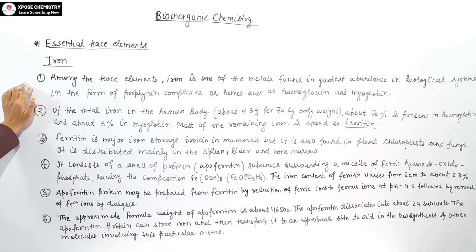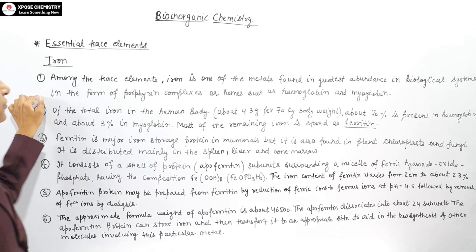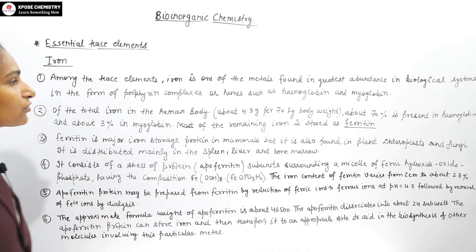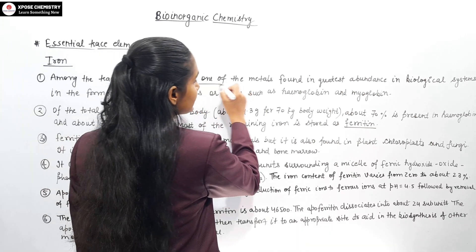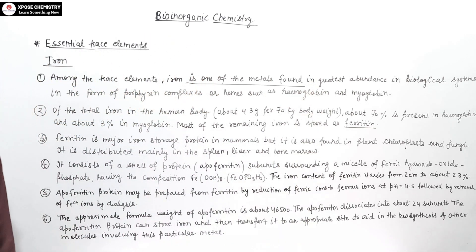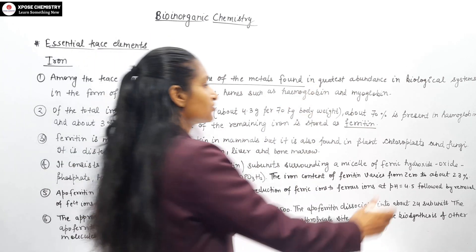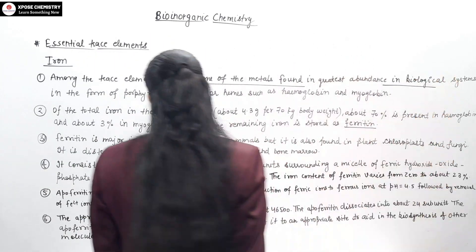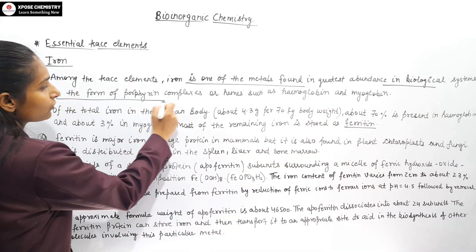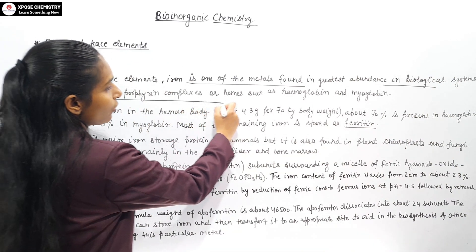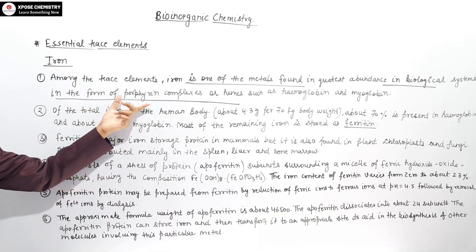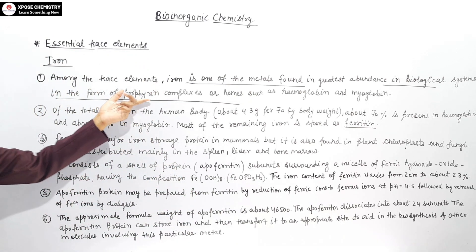First, we do iron. Iron is the most abundant trace element in biological systems. It is found in the form of porphyrin complexes, or hemes.